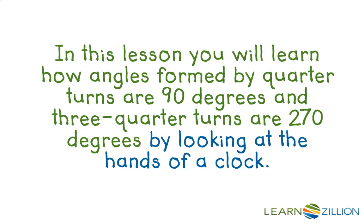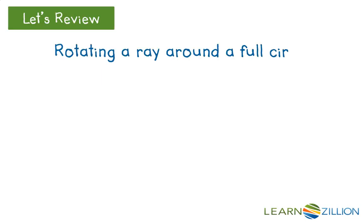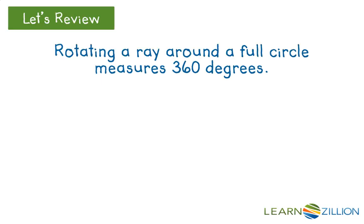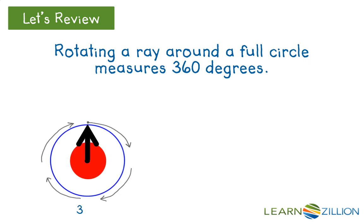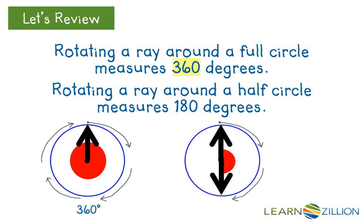In this lesson, you will learn how angles formed by quarter turns are 90 degrees and 3 quarter turns are 270 degrees by looking at the hands of a clock. Let's review. Rotating a ray around a full circle measures 360 degrees. Rotating a ray around a half circle measures 180 degrees.